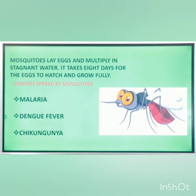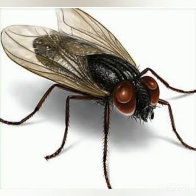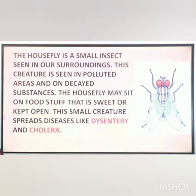Do you know which creature this is? Yes, it is a house fly — a very small insect seen in our surroundings. These creatures are mostly seen in polluted areas and on decayed substances. The house fly may sit on foodstuff that is sweet or kept open. This small creature also spreads diseases like dysentery and cholera.